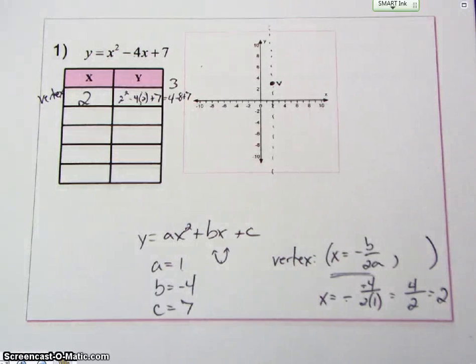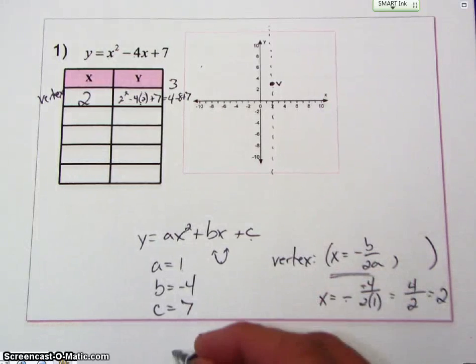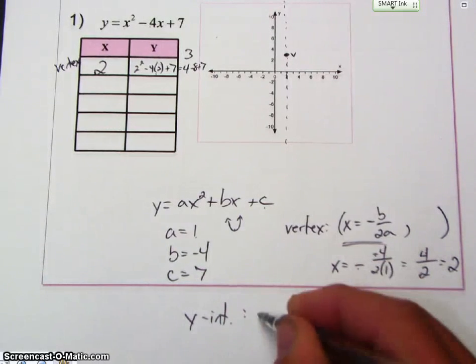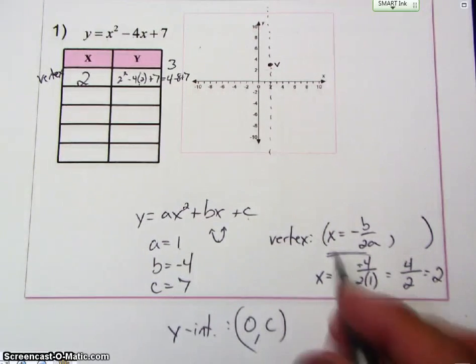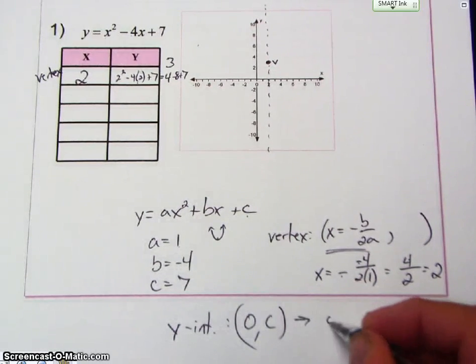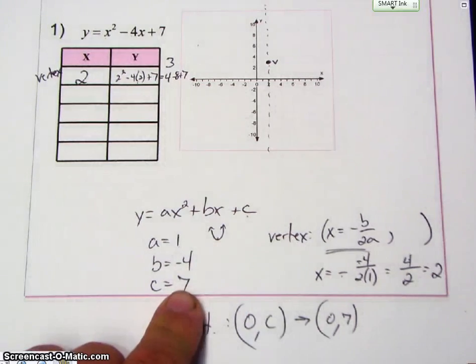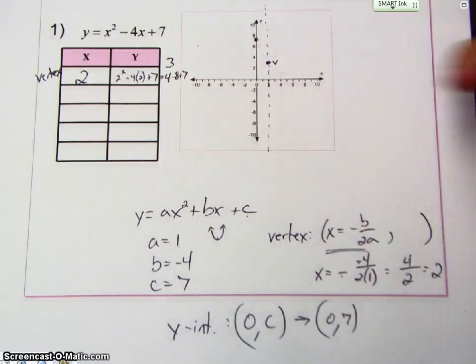Let's find the Y intercept. Remember, the Y intercept is 0, C. Well, C is what? 7. So there's my Y intercept. It's 7. So 0 would be 2, 4, 6, 7. Here's my Y intercept.